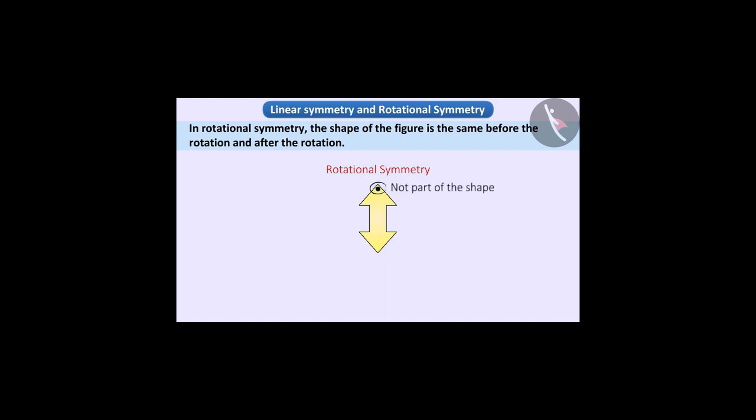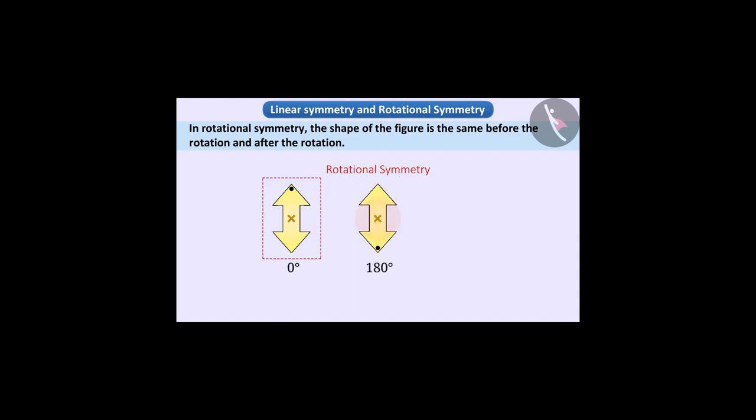We will show a point on this figure to check for rotational symmetry. Keep in mind that this point is not part of the shape. If this shape is rotated around its centre, we can see that at a rotation of 180 degrees the shape exactly matches the initial shape. In the same way, at a rotation of 360 degrees it again matches the initial shape.